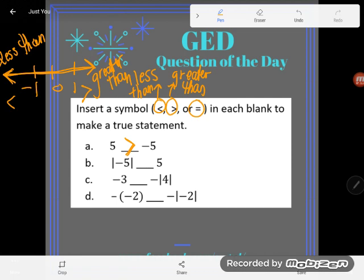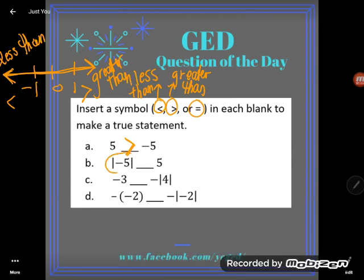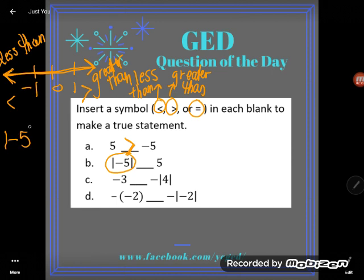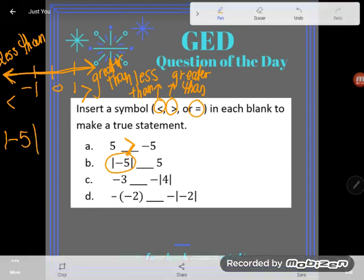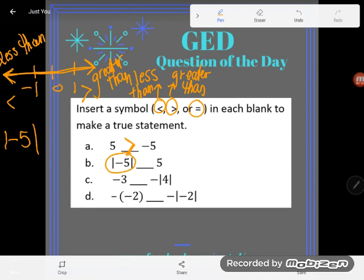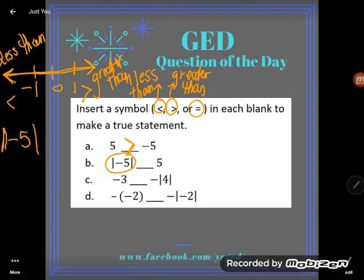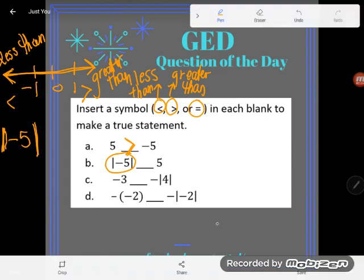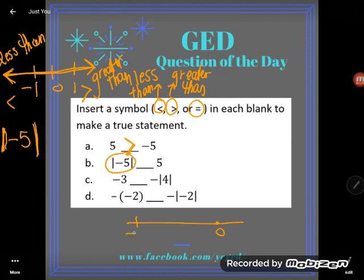But watch out for B. B can be simplified, and you should always simplify before you consider a number's value. This doesn't just say negative five - that says the absolute value of negative five. Remember what we learned: absolute value is defined as a number's distance from zero on a number line. So I'm asking you how far is negative five from zero on a number line? Well, of course it's five units away.